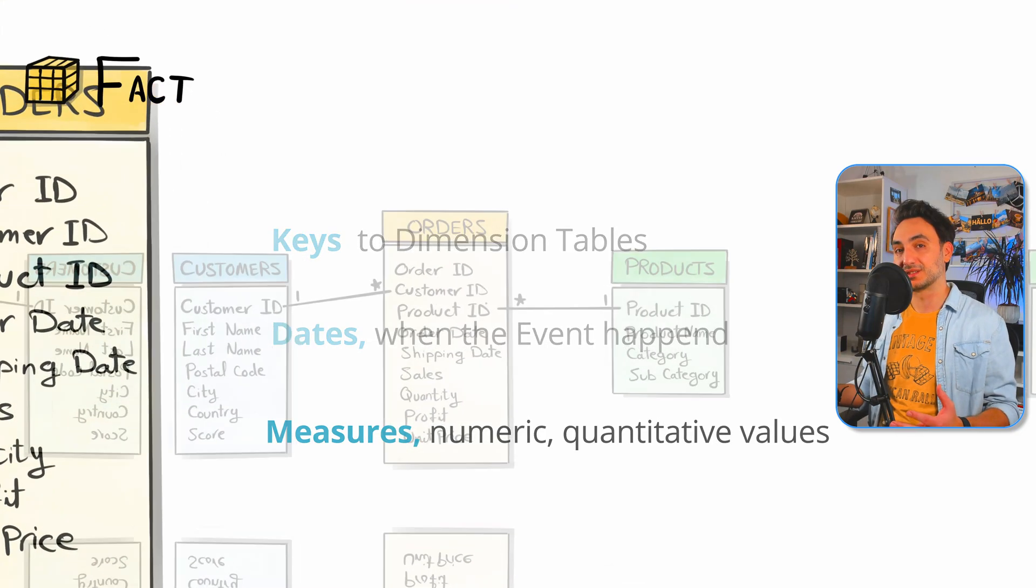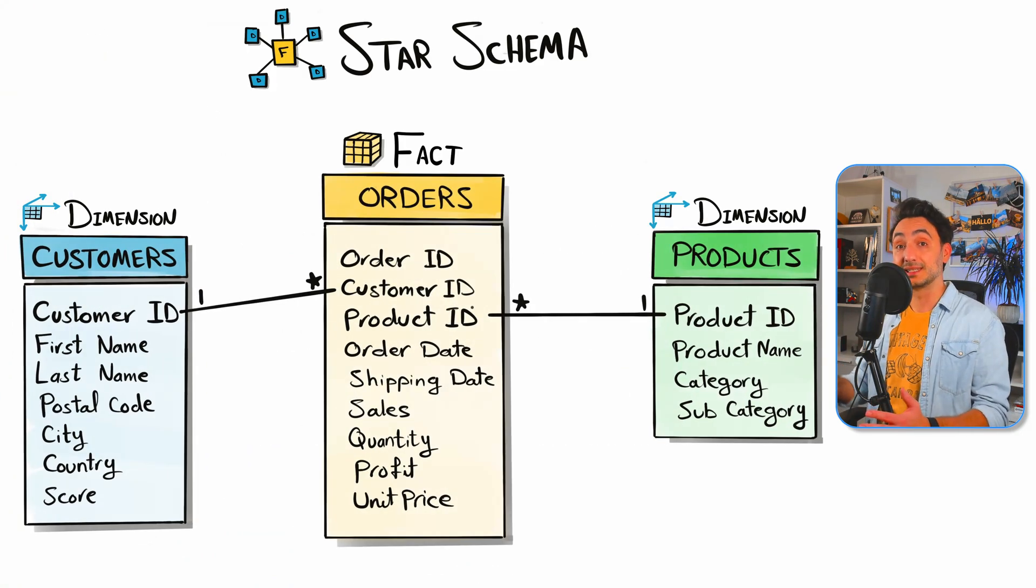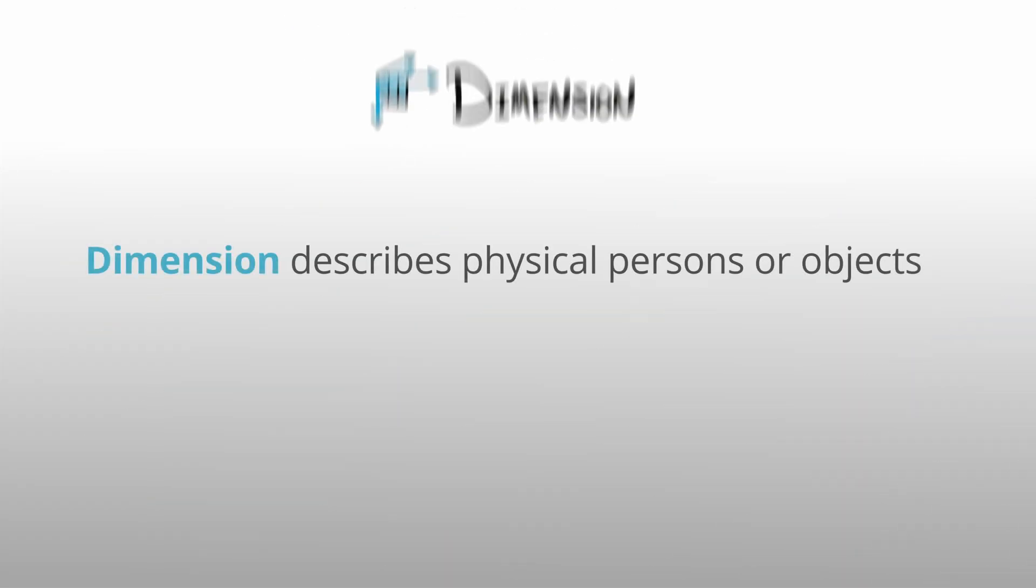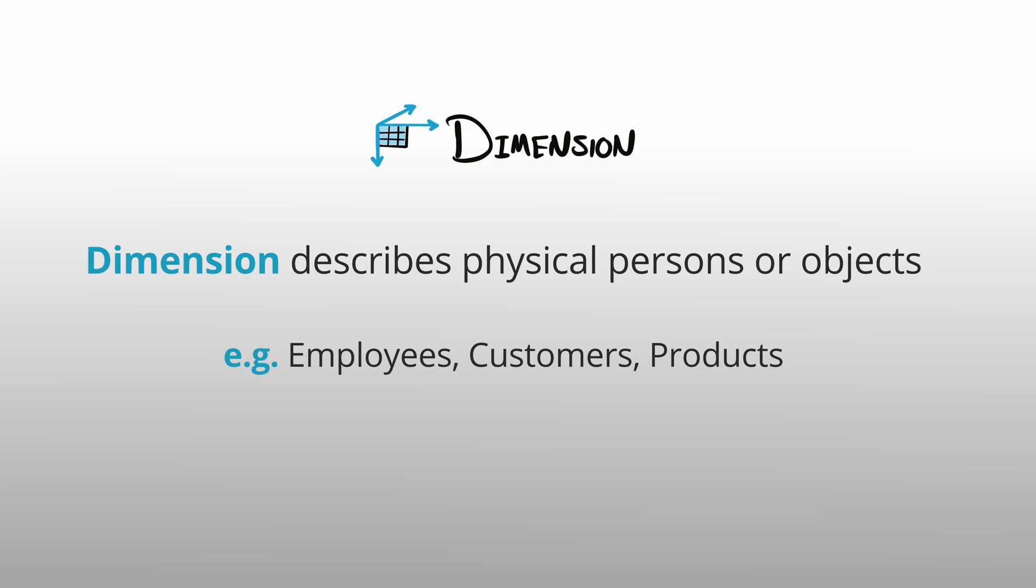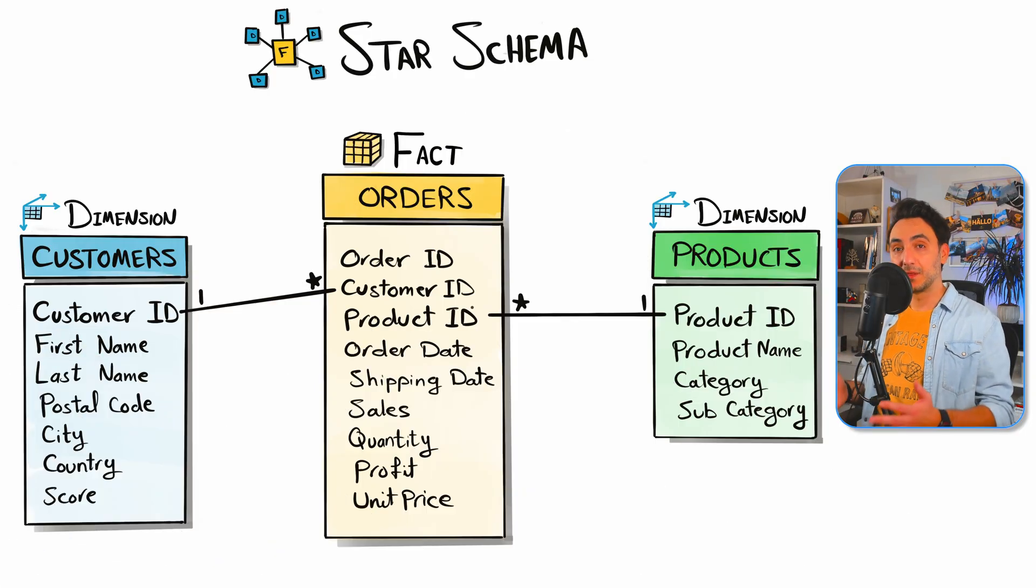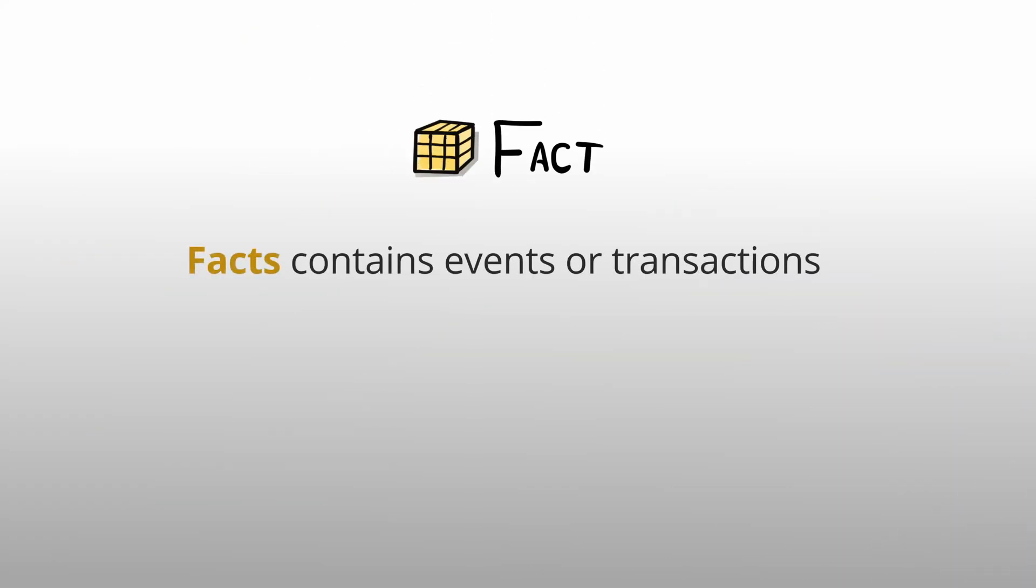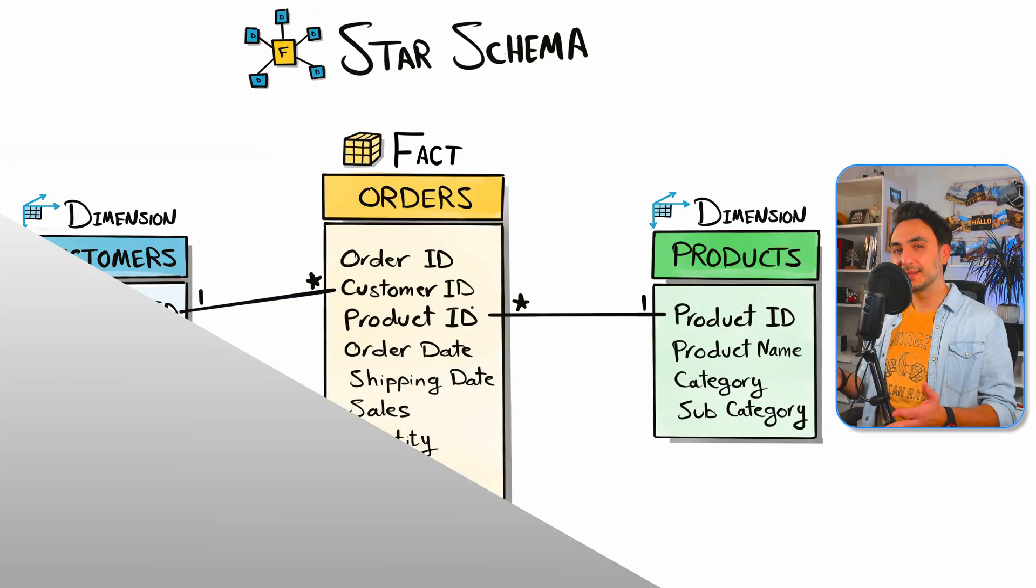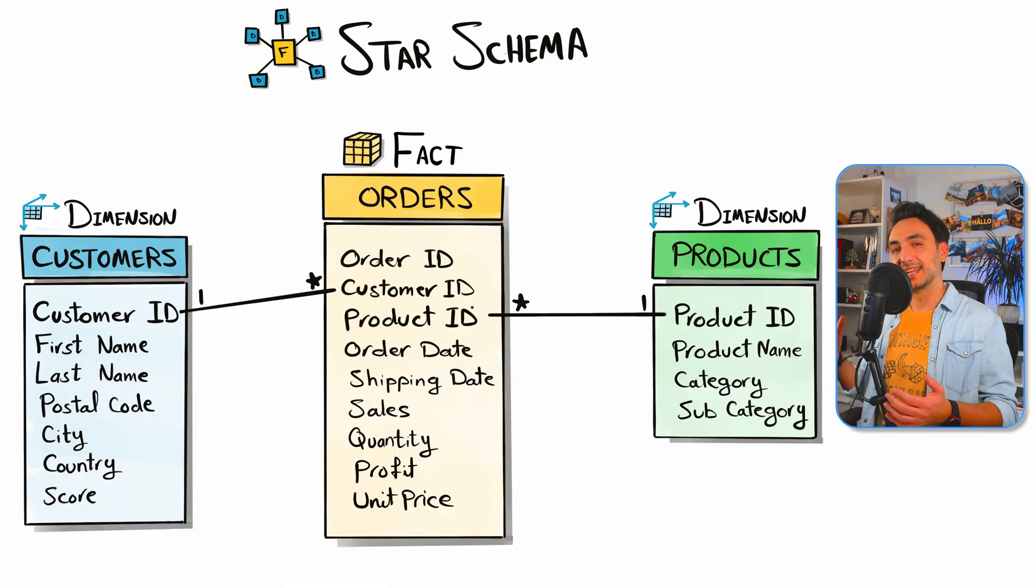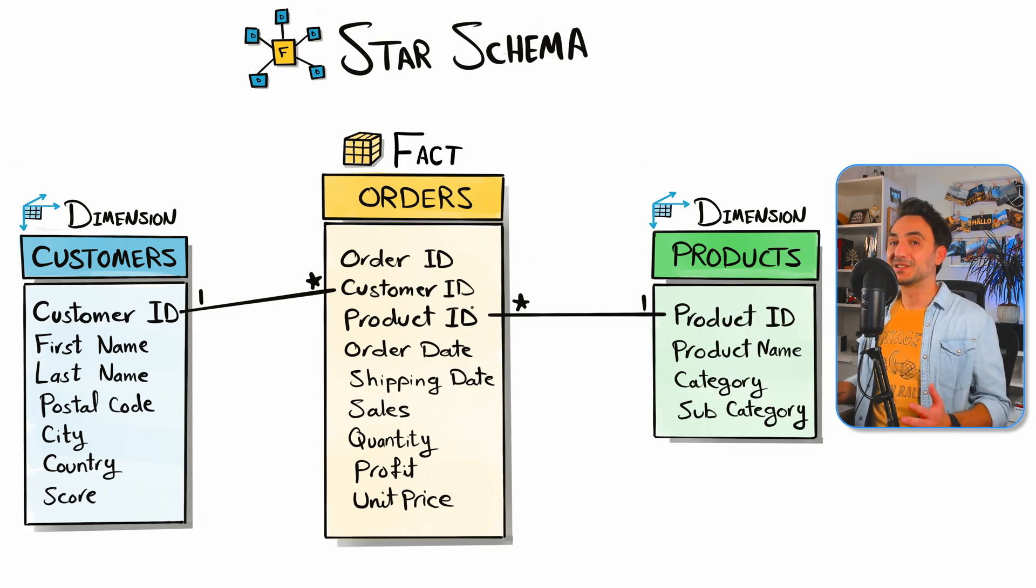So to summarize, how do we decide if a table is dimension or fact? If you have a table that contains information about a physical person or an object like employee, customers, products, then this table is a dimension. Usually they are small tables. On the other hand, if you have a table that contains events, for example we have sales, orders, logs, ATM transactions - so any tables that has events, transactions, and has time in it - we call it facts, and usually they are really huge tables. In our data model, in the data sets, we have two dimensions: customers and products. In the middle, we have our fact: the orders.